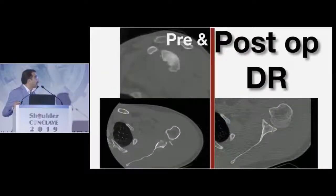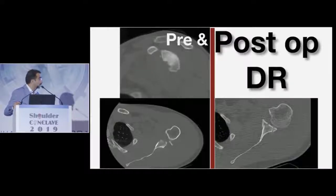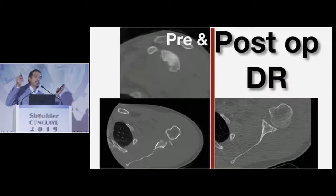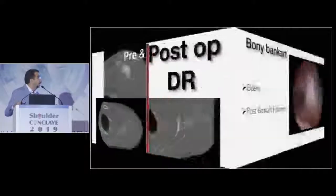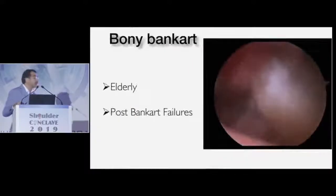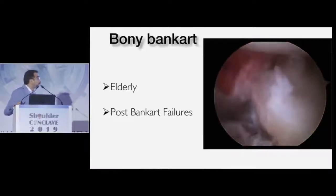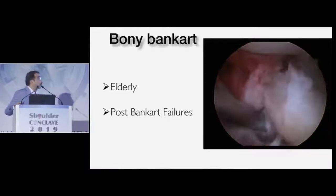There's another patient where you can see the pre-op to post-op CT scan difference, with the anchor channels visible. It's important to restore the dish — if you don't give that natural hollow to the glenoid, the head is not going to sit in place and will be a problem.